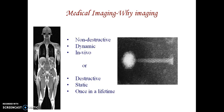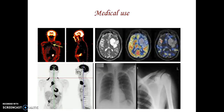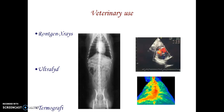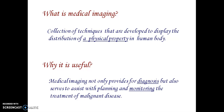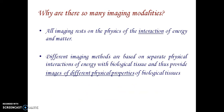Medical imaging is used for both non-destructive dynamic in-vivo imaging and destructive static once-in-a-lifetime imaging. Applications include brain, chest, thyroid, and breast cancer imaging, as well as thermography for veterinary uses. A medical image is a collection of depictions developed to display the distribution of a physical property in a human body. Medical imaging provides not only diagnosis but also assists with planning and monitoring treatment of malignant diseases. All imaging rests on the physics of the interaction of energy and matter.